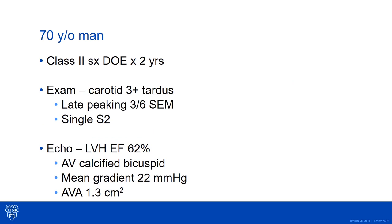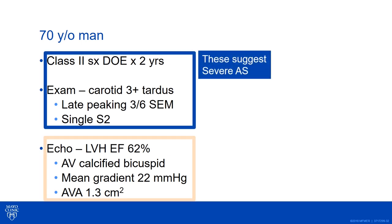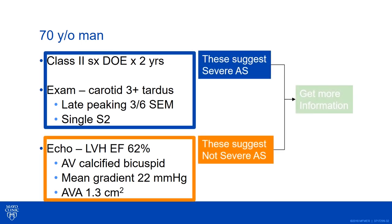For the 70-year-old man, there was a mixture of responses. He's symptomatic and has a physical examination consistent with severe AS, but an echocardiogram suggesting not severe AS. This is the case where the clinical impression and echocardiographic impression don't match one another, so we needed more information. A hemodynamic catheterization would be a reasonable way to go to figure out what's happening — or, if he truly does have non-severe AS, what are the causes of his dyspnea?